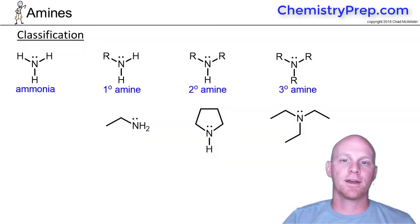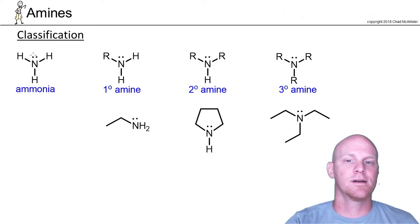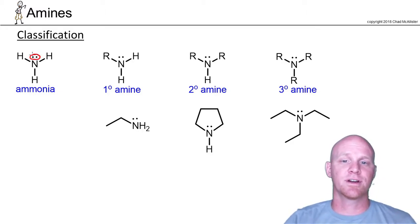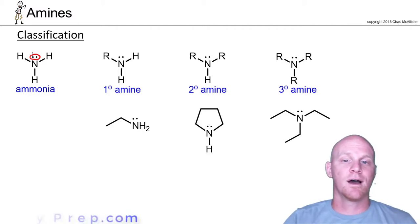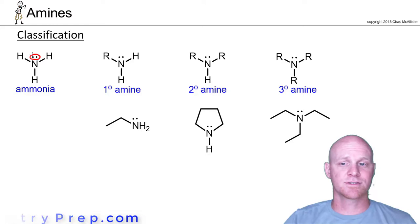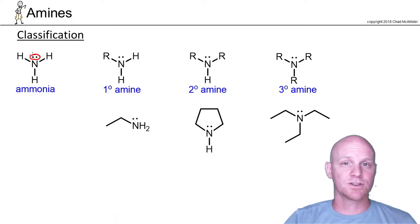We dive into a chapter on amines, which are your classic organic bases. If we take a look at ammonia — technically not an organic compound — it definitely shows the basicity of the lone pair of electrons on the nitrogen. Even though by Gen Chem standards amines would be considered weak bases, by organic chemistry standards we usually consider them to be moderate to strong bases.